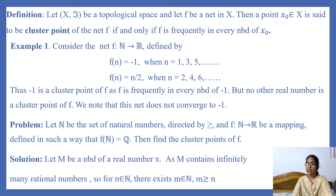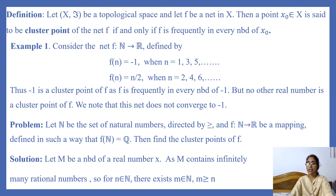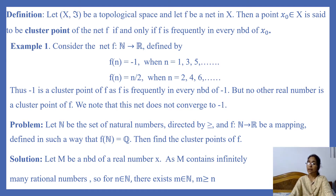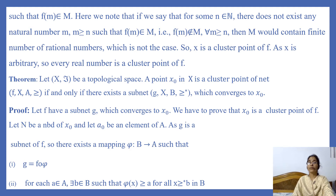Consider any real number x and suppose M is a neighborhood of x. M contains infinitely many rational numbers, because any neighborhood is an open interval containing x and that neighborhood contains infinitely many rational numbers. So for any natural number n in N, there exists m in N with m ≥ n such that f(m) belongs to M.